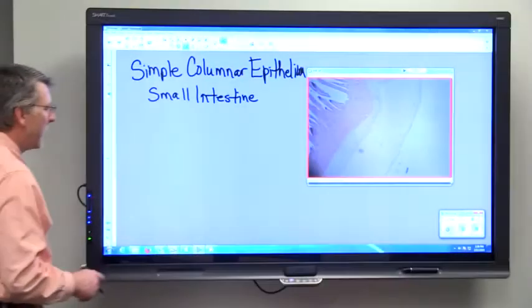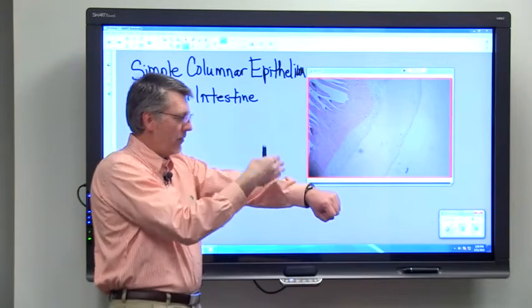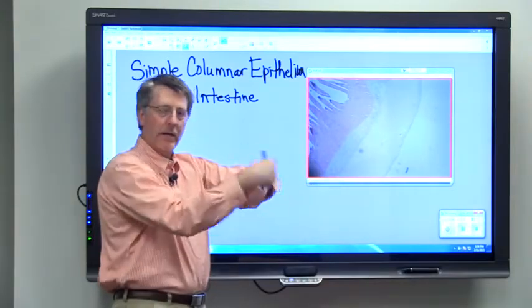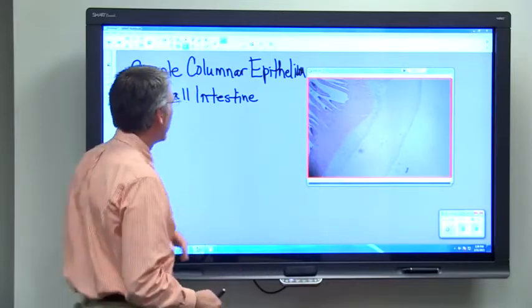I'm just going to scroll around so you can see that it's a circular structure when we look at it in cross section. If you think about having a tube that's hollow, like my arm or a hollow tube, if we cut it crossways and looked at it right at the end, we would see a circle. That's what we're seeing here.